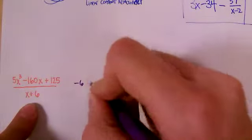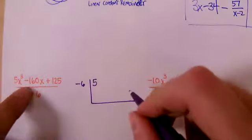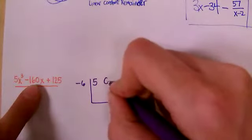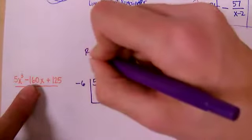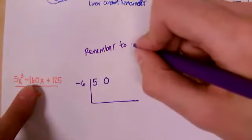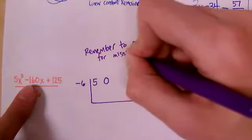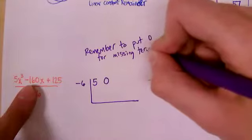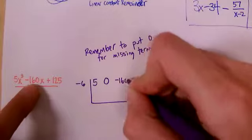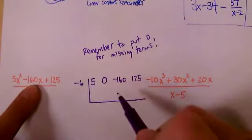We have x+6. So we're looking at a negative six on the outside. On the inside, I have a five. I'm missing an x² term, you have to remember to put a zero there if there's a missing term. So write as a note to yourself, same thing we do in long division, remember to put zero for missing terms. If you don't do that, it screws up the whole process. So we have a zero x², then it's a negative 160 in the x spot, and it's a 125 in the constant spot. So it looks like this to set up our problem.